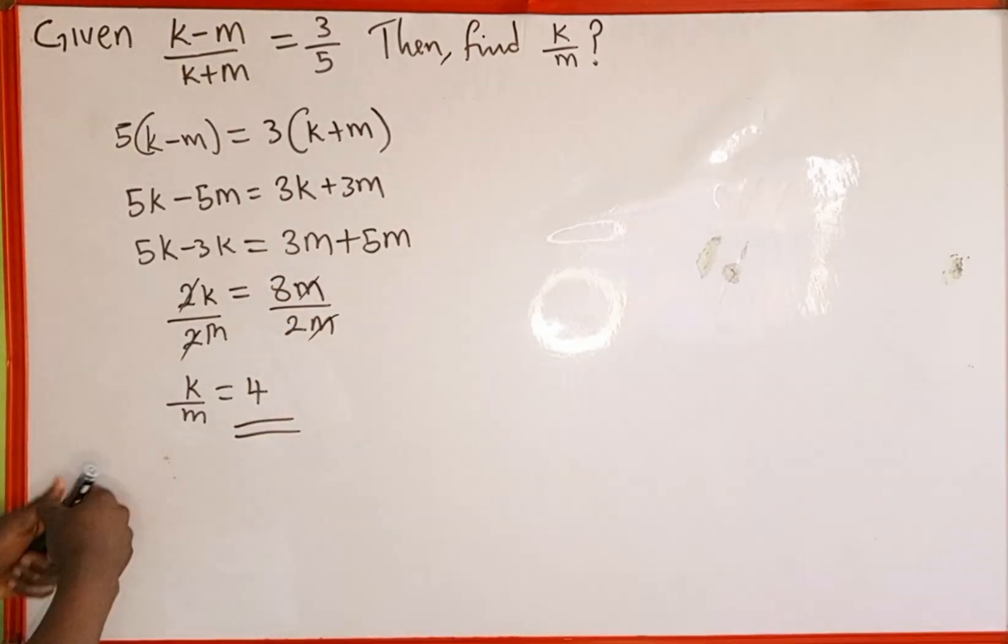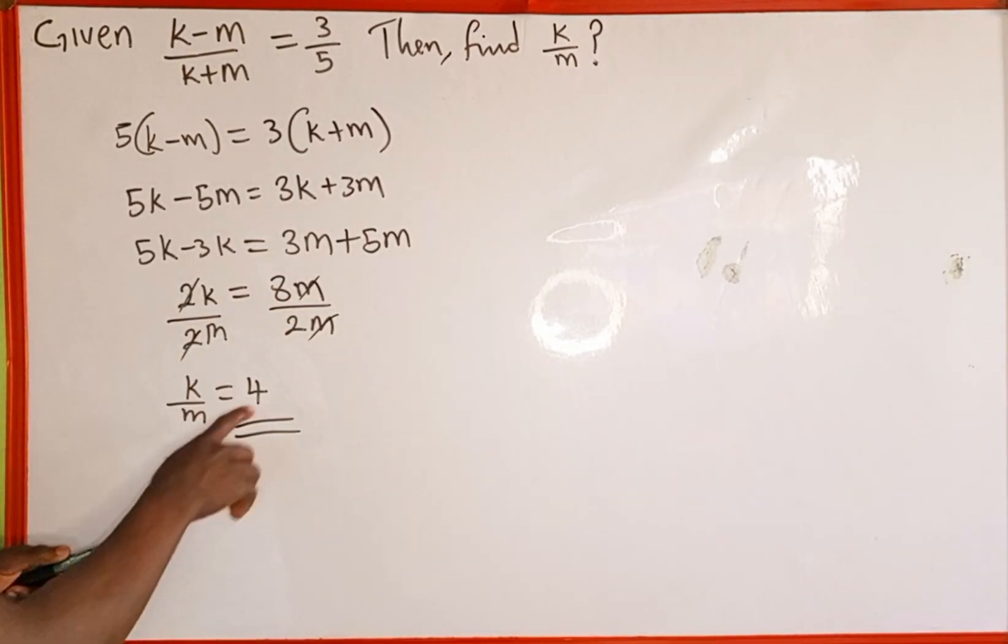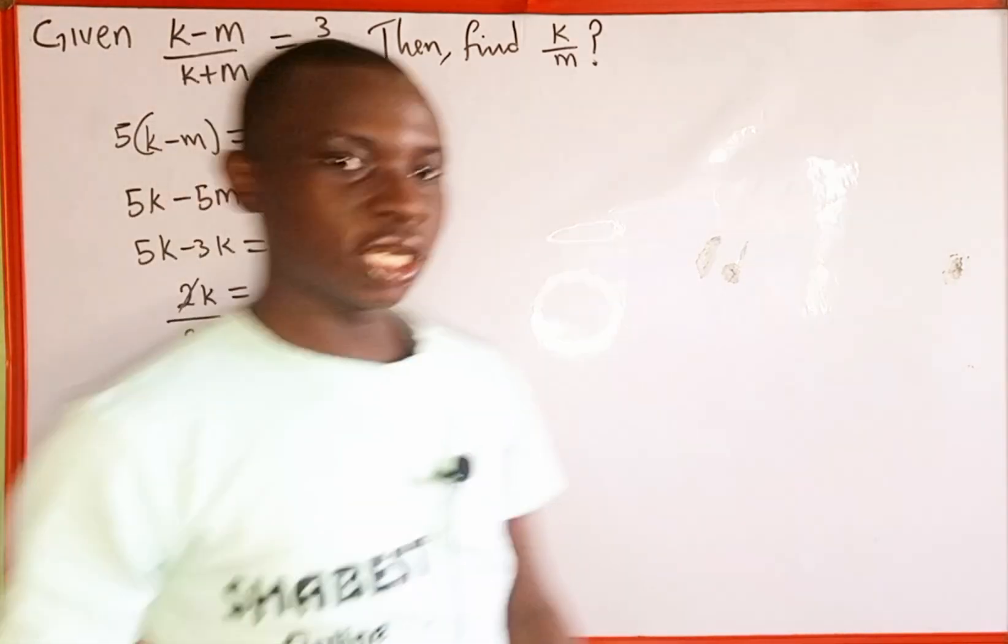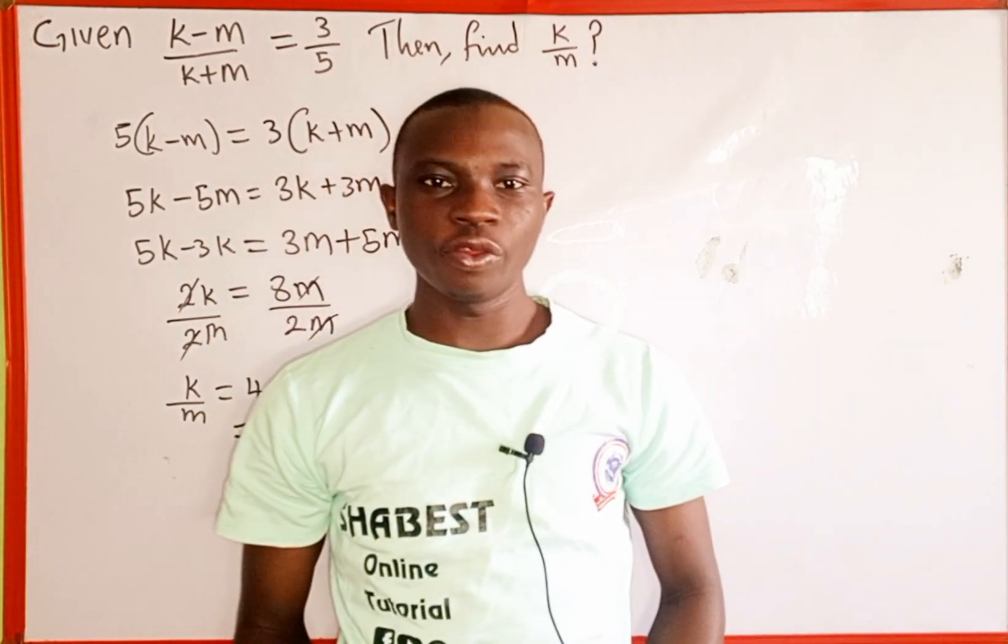So therefore the value of k over m from this equation is 4. Thank you for watching and please follow and subscribe for more videos like this. Thanks.